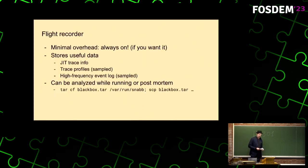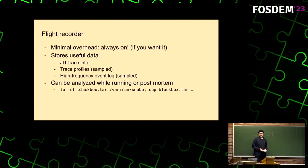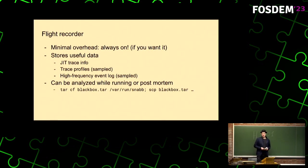Any piece of software has bugs, and in our case even suboptimal performance is often considered a bug. We deal with the performance issue by shipping SNAP with a flight recorder. This flight recorder has minimal overhead, it's always on even in production, and it stores useful data. Part of that data is really useful to profile your application after the fact or while it's running.